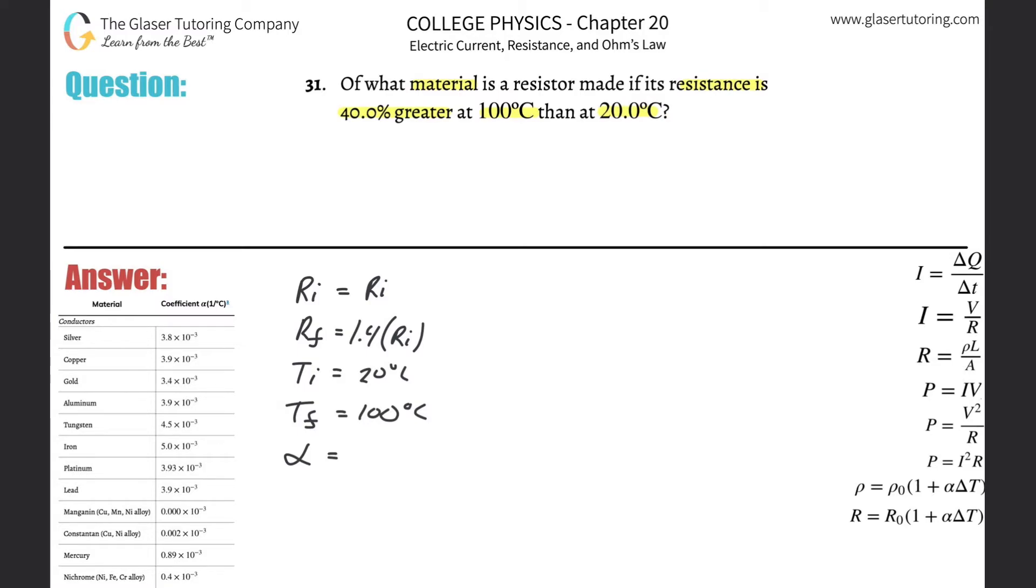I realize now that the only unknown here is going to be my alpha value. Look at the table—all these materials have different alpha values. If I can find the alpha value, would that tell me the nature of the material I'm dealing with? If that was your thought process, I applaud you. Perfect.